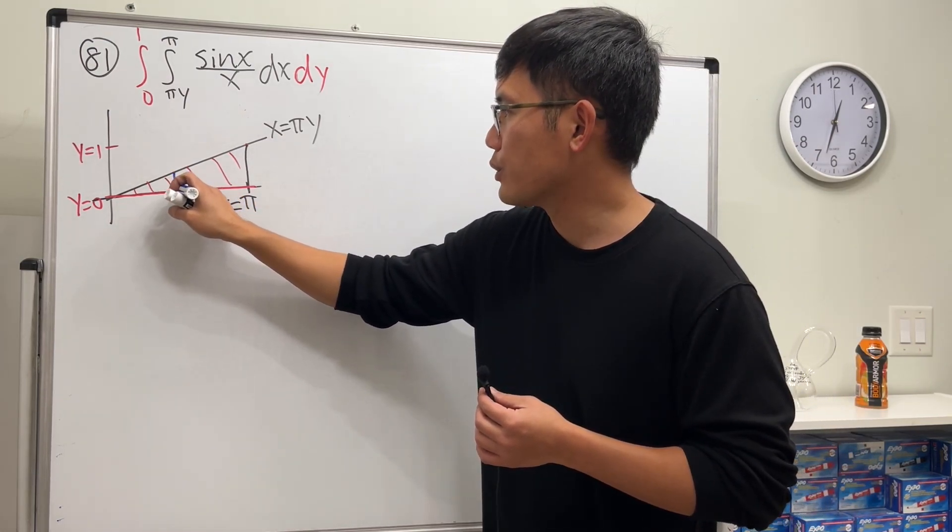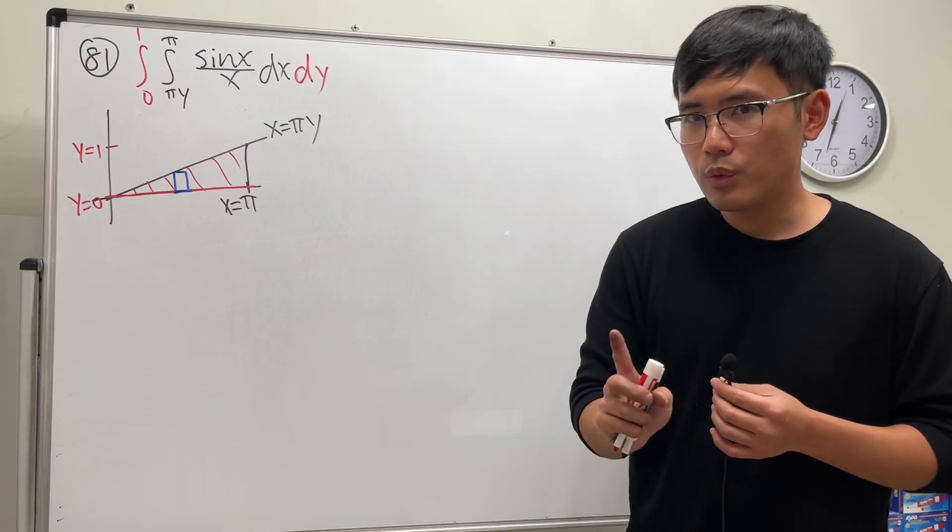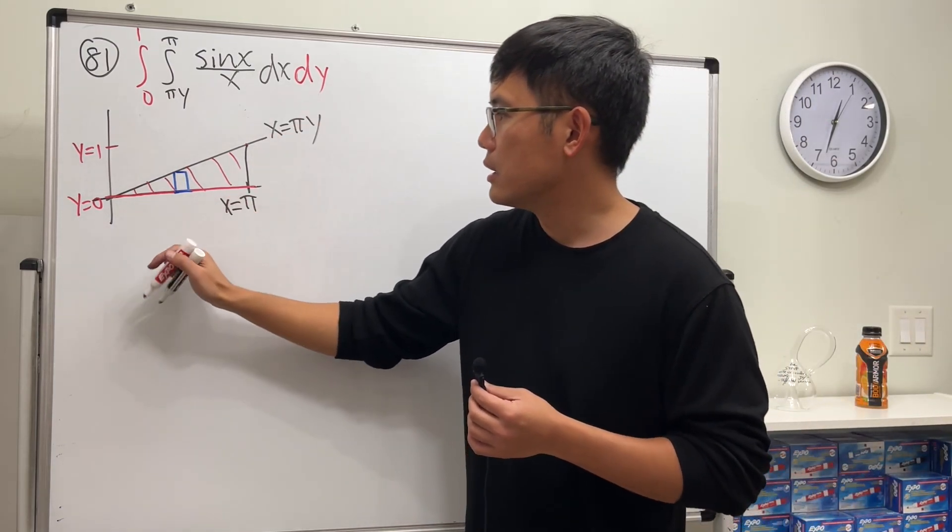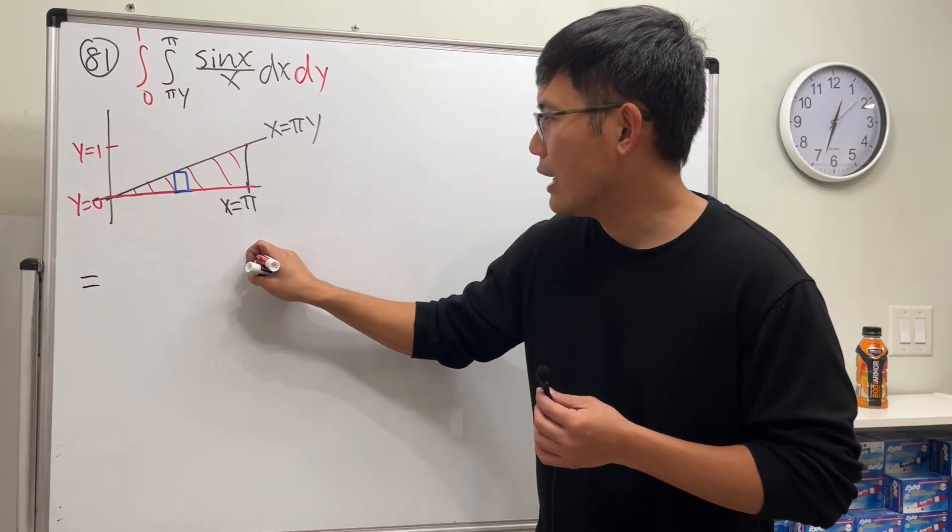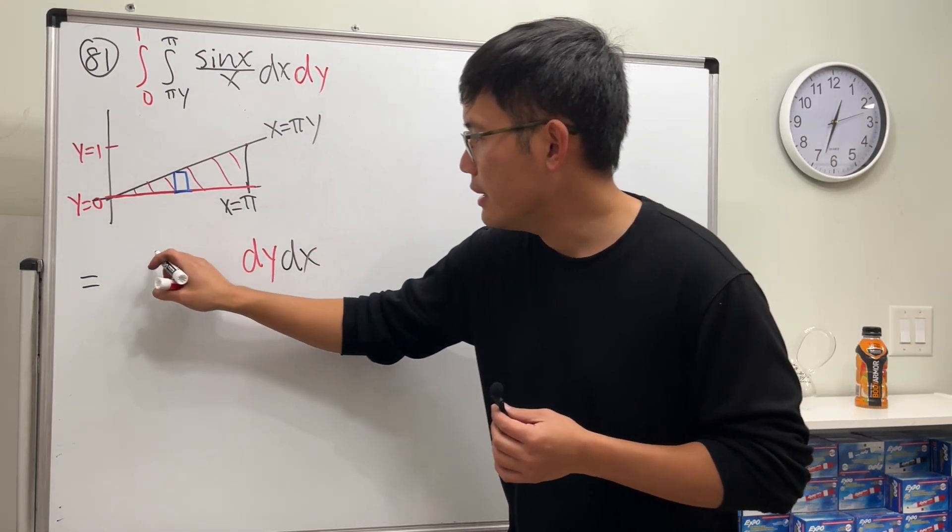Originally we go horizontally, right? We have this to that. So now we have to look at this vertically, so we draw a vertical rectangle because we want to go with dy first.